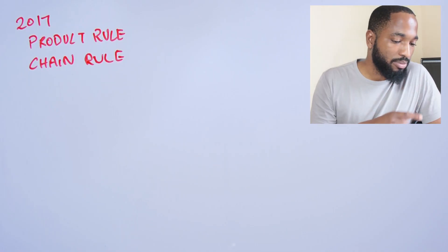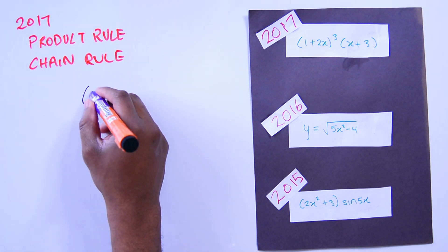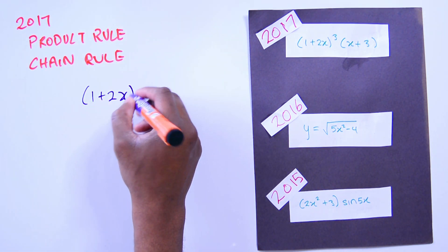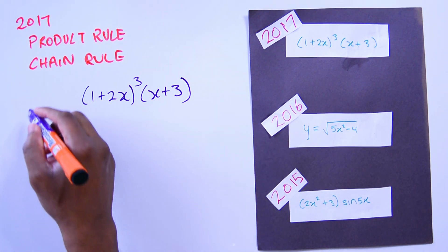So in 2017, the skills being tested were product rule and chain rule. We were just given the equation (1 + 2x)³(x + 3). Since we were just given this to differentiate, we need to introduce y into the equation.